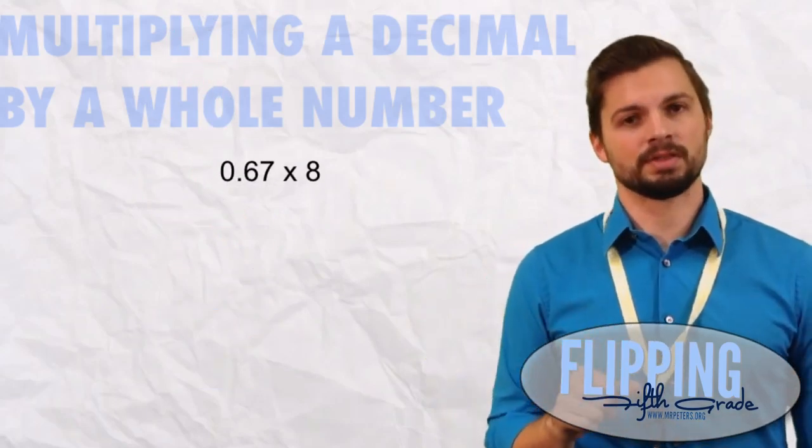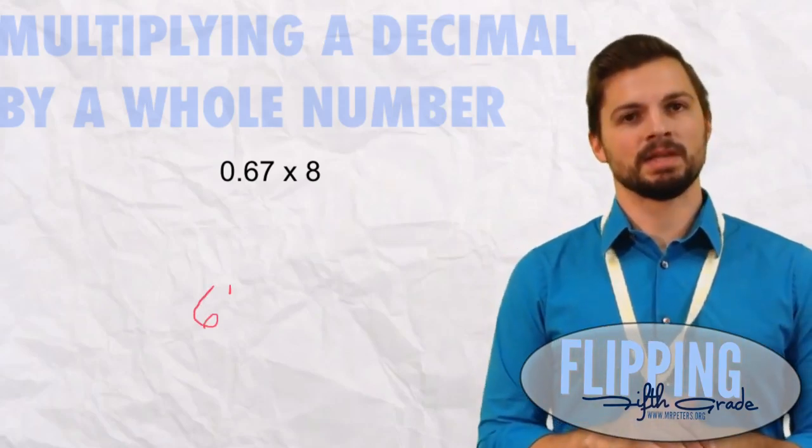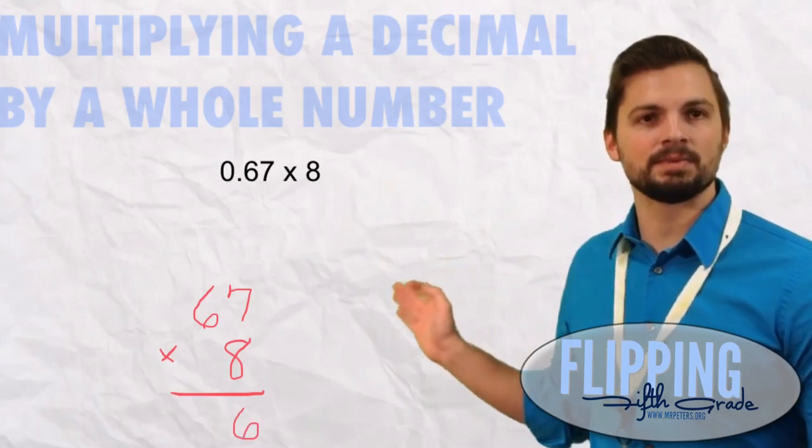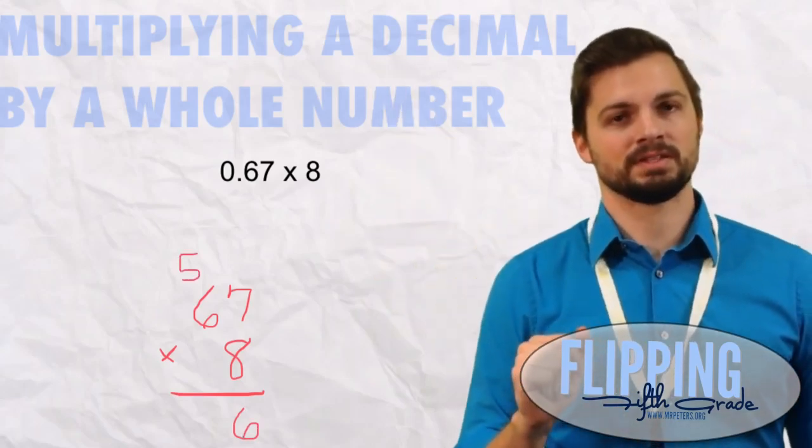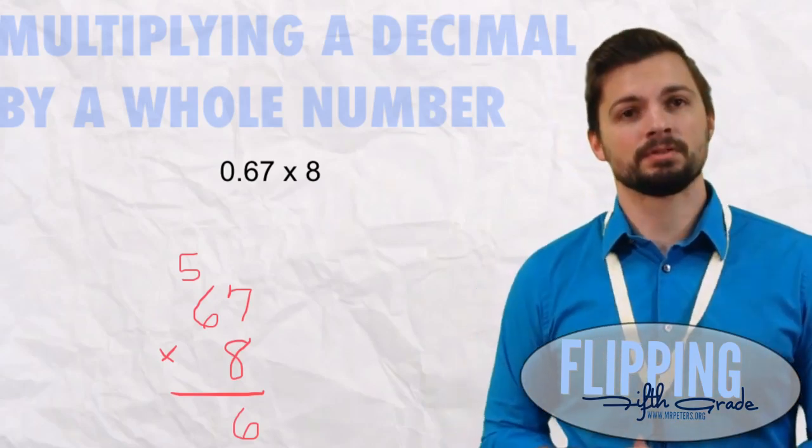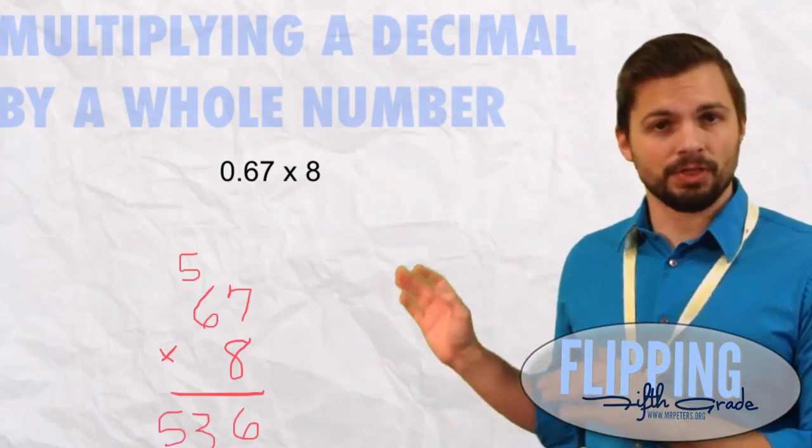We have 0.67 times 8. Let's imagine that it's 67 times 8. 7 times 8 is 56. We put down that 6 and we carry the 5 above the 6. Then we do 6 times 8 is 48 plus 5 is 53. So our answer is 536.